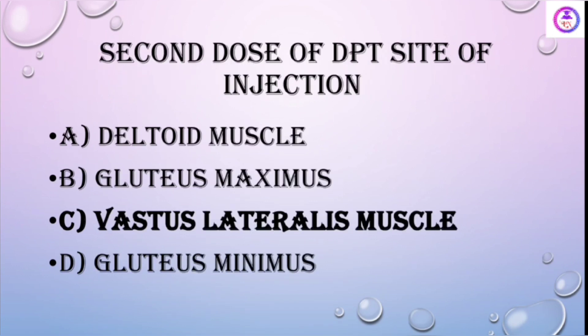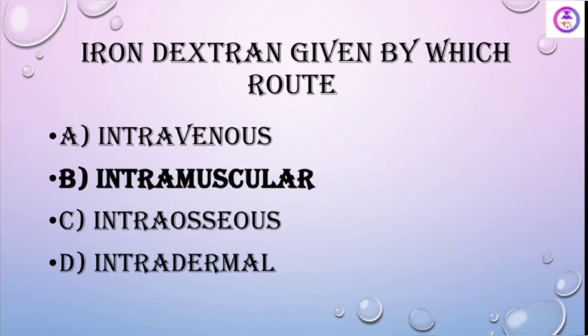The second dose of DPT: the site of injection is the vastus lateralis muscle. Iron dextran is given by the intramuscular route.